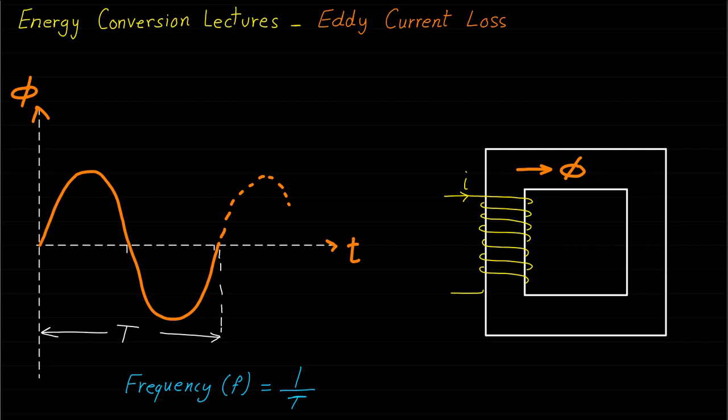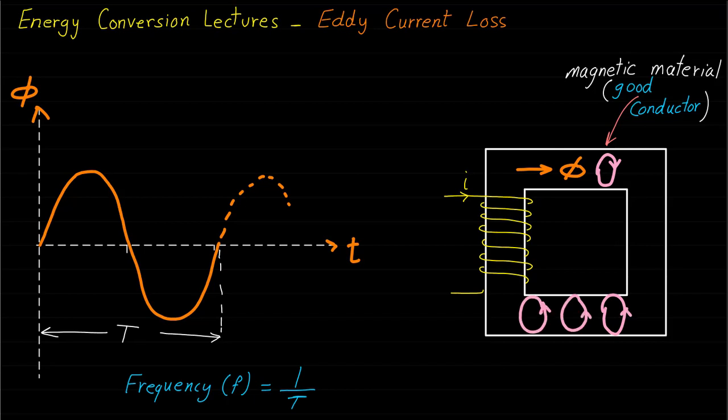Since the magnetic materials, such as iron, are also good conductors, the time variation of magnetic field inside the core will cause a flow of eddy currents inside the core. These currents are the cause of the eddy current power loss which is dissipated as heat.